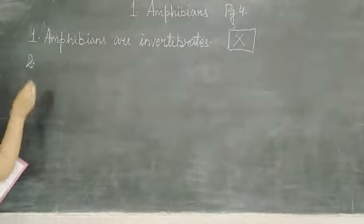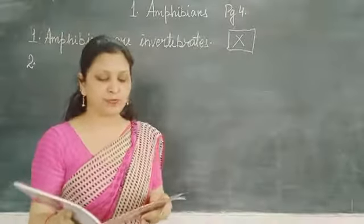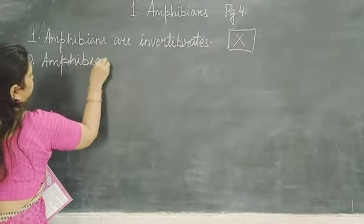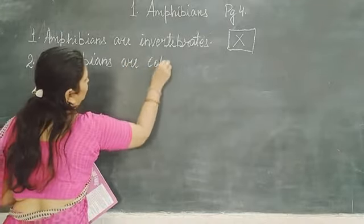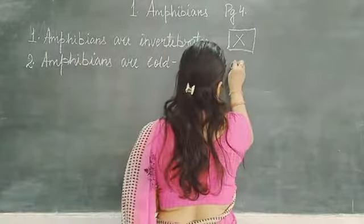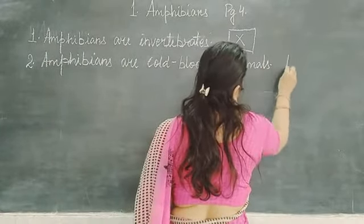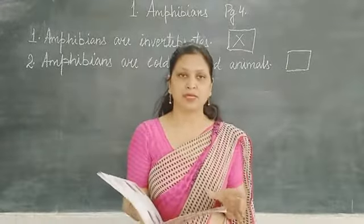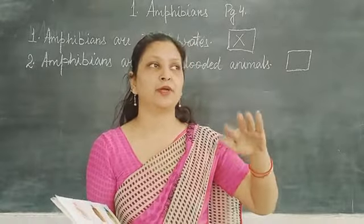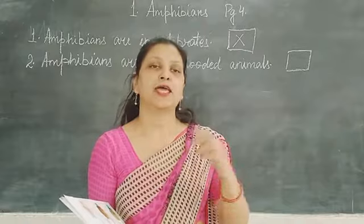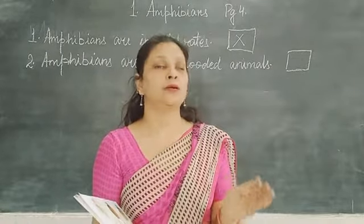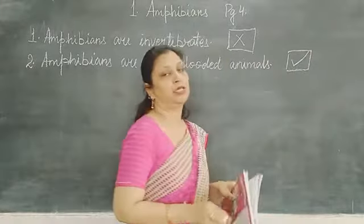The second point is: amphibians are cold-blooded animals. Cold-blooded means their body temperature changes along with the outdoor temperature — whatever the temperature is outside, their body changes like that. So insects, fish, and amphibians are all cold-blooded. This statement is correct.